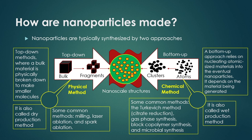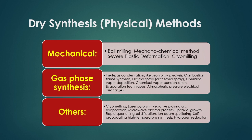These two approaches — physical and chemical — can be used to synthesize nanoparticles. For the physical method, materials are converted by mechanical action from fine size to nano size. Techniques for mechanical size reduction include ball milling, mechanochemical method, severe plastic deformation, and cryo milling. For gas phase synthesis, techniques include inert gas condensation, aerosol spray pyrolysis, combustion flame synthesis, plasma spray or thermal spray, chemical vapor deposition, chemical vapor condensation, evaporation techniques, and atmospheric pressure electric discharge.